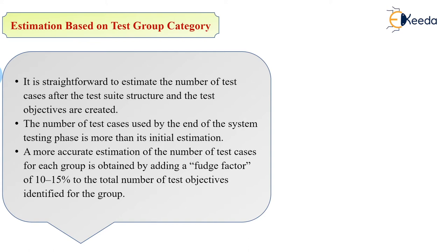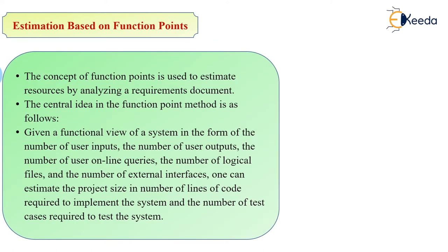The second estimation is based on function points. Function points estimate the resources needed for analyzing requirement documents. The central idea of the function point method is that it gives a functional view of a system in the form of number of user inputs, user outputs, and user online queries.